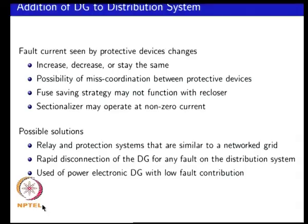We saw that in general, in a distribution system, the fault current levels can actually increase, decrease, or stay the same. If your fault current level changes during the addition of a distributed generator source, then there is a possibility of miscoordination between your upstream and downstream device because of this change in the current level. You cannot uniformly say that the current level is always going to increase at the protection point; it can actually go in all three ways.